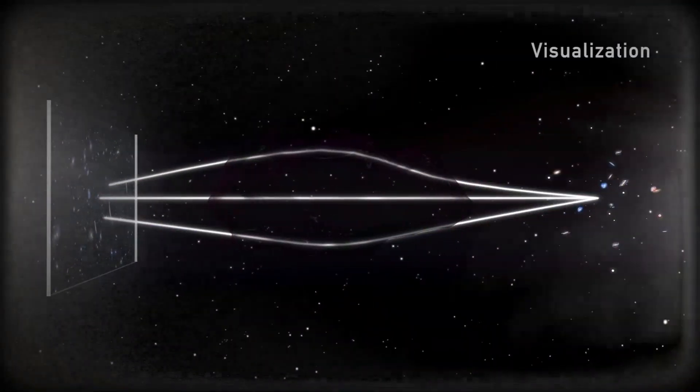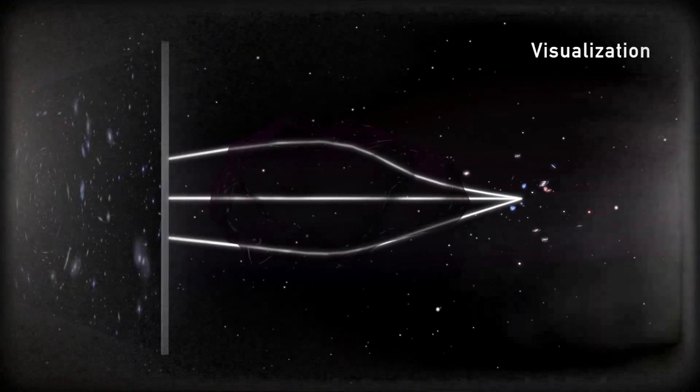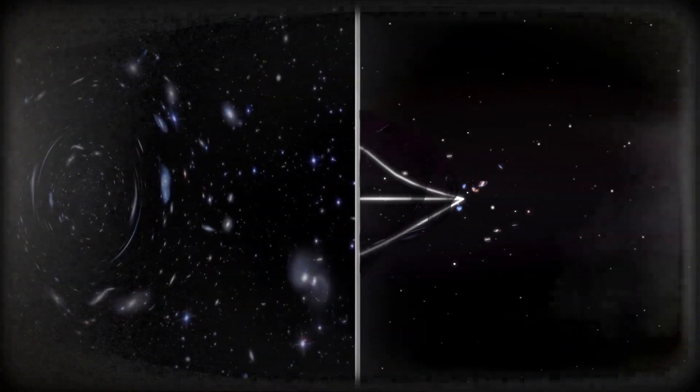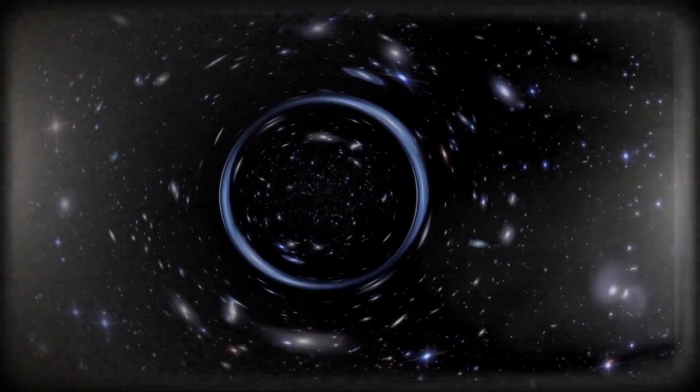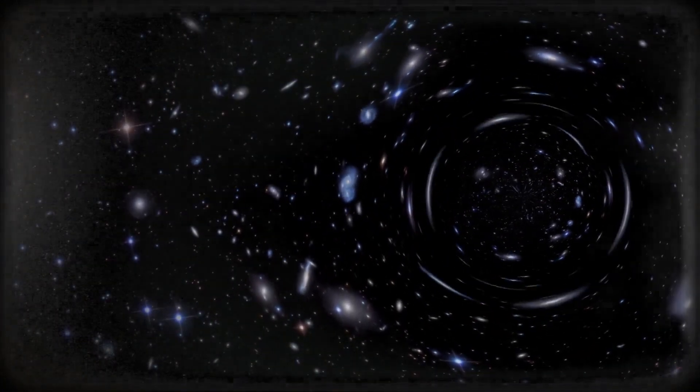According to this theory, gravity is interpreted as the curvature of space and time due to the presence of mass. In other words, any object with mass can bend space and time around it, which affects the path of light passing near it.